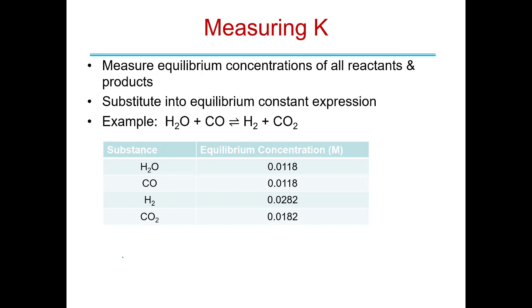For example, here we have a reaction between water and carbon monoxide to make hydrogen gas and carbon dioxide gas. At equilibrium we've measured the molarities, so we can calculate a Kc, a concentration-based equilibrium constant. Since these are all gases but we have molarities instead of partial pressures, the equilibrium constant expression is products over reactants: the molarity of H₂ raised to the first power, multiplied by the equilibrium concentration of CO₂ raised to the first power, divided by the equilibrium concentration of H₂O and CO, each also raised to the first power.